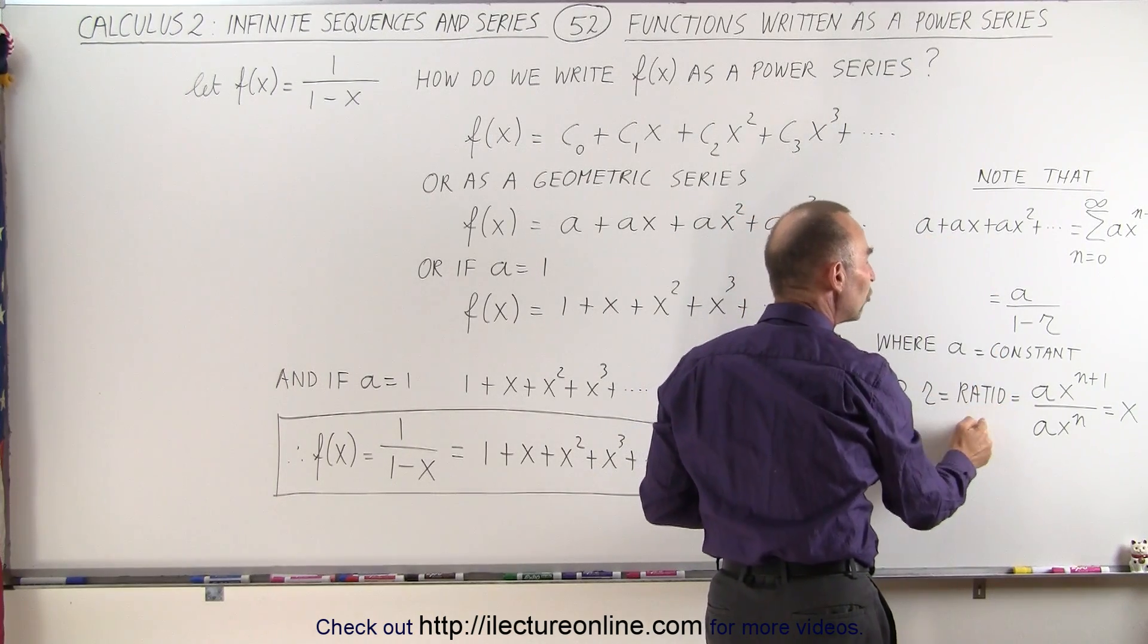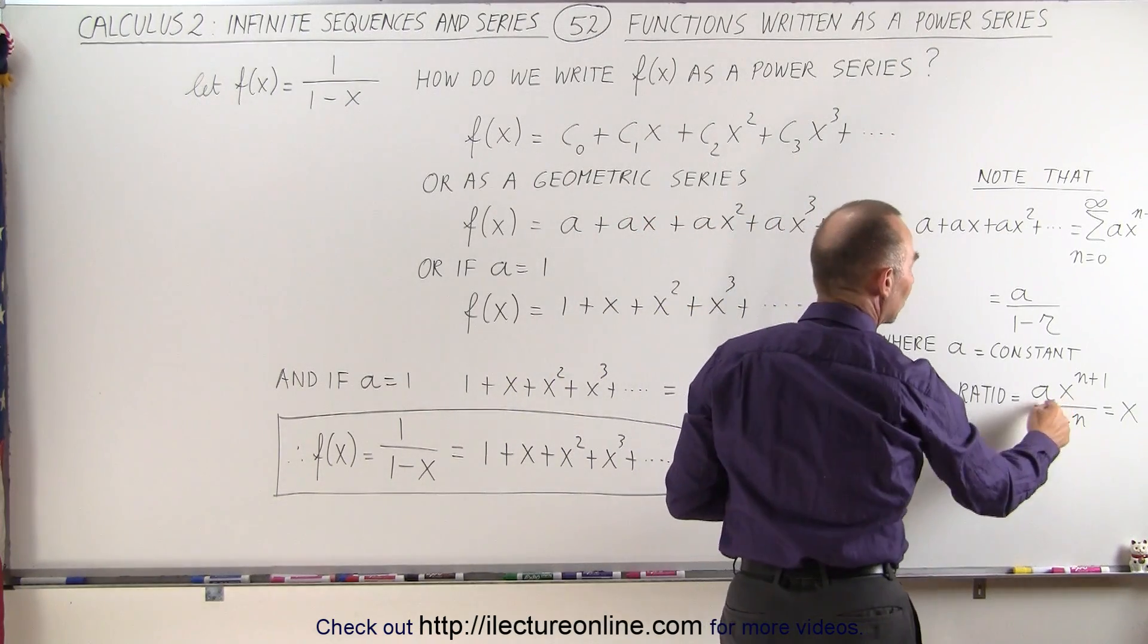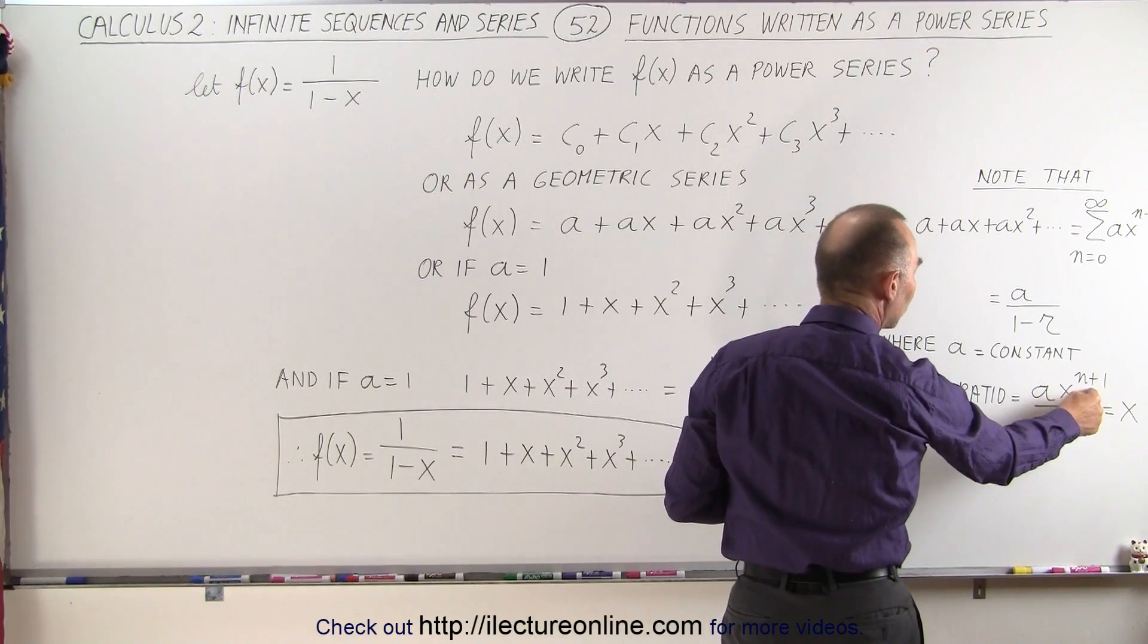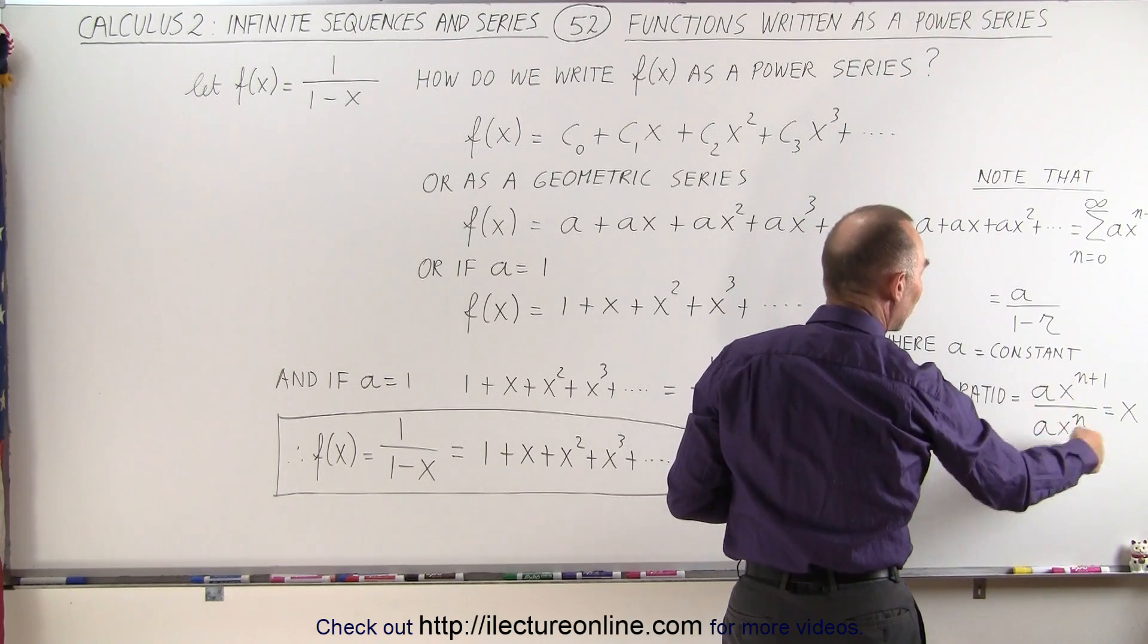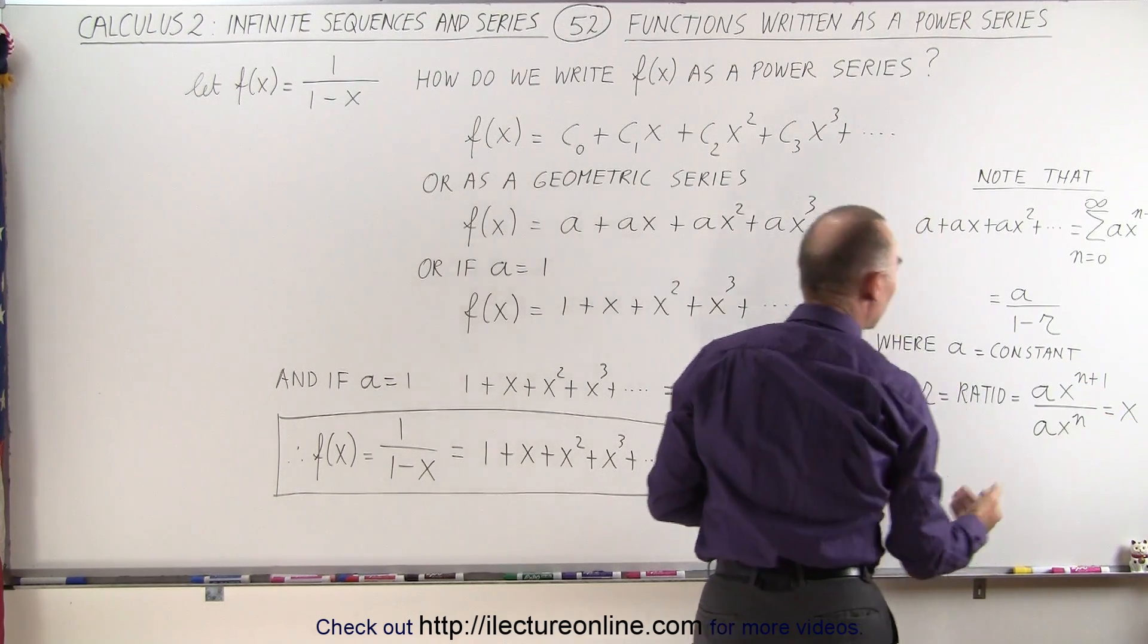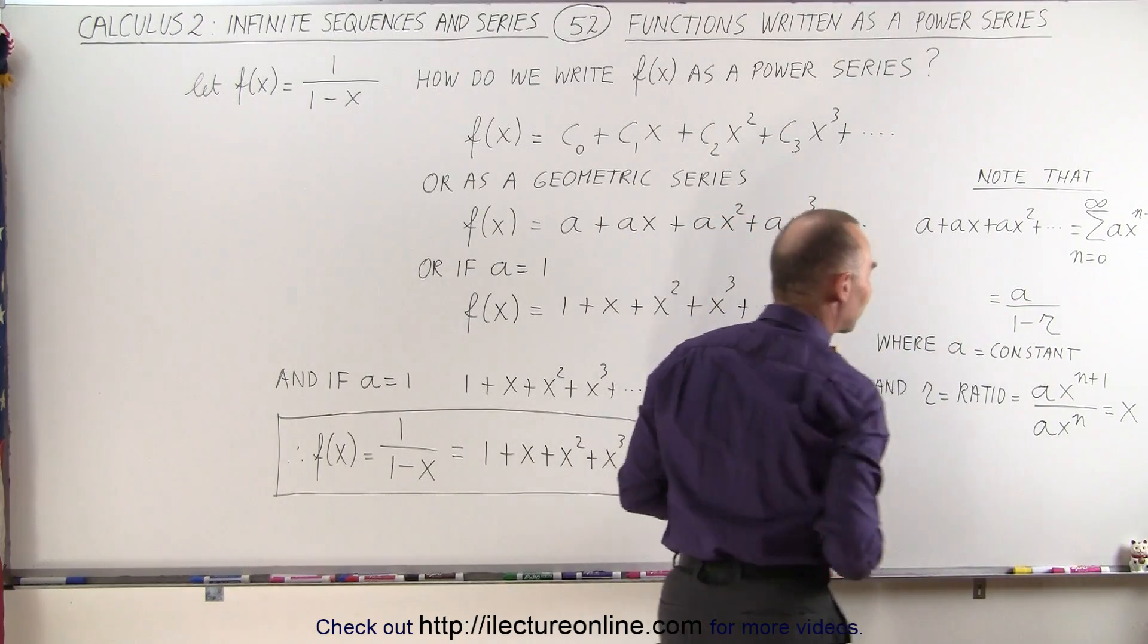and r is simply the ratio of two consecutive terms. That would be a times x to the n power, the ratio of that is equal to x, so in other words, this is equal to a divided by 1 minus x.